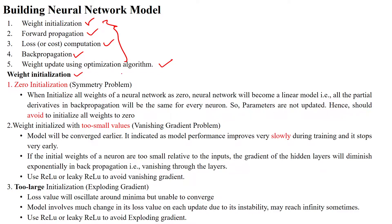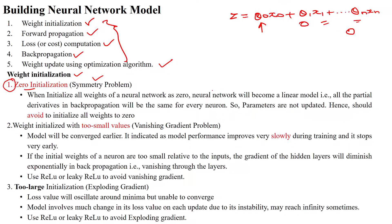Weights can be initialized randomly in three different approaches. The weight can be initialized to zero, but that is called the symmetric problem. The objective function is z = θ0·x0 + θ1·x1 + ... + θn·xn, where weights are indicated by theta. When you initialize weights to zero, all patterns become zero, the network becomes a linear model, and all partial derivatives in back propagation will be the same — weights will not be updated at all. We should avoid initializing all weights to zero; any one or a few weights may be zero, but not all.